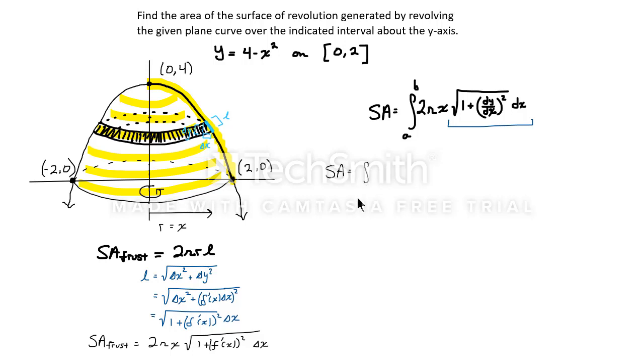It's going to be the integral from 0 to 2 of 2πx times the square root of 1 plus... oh, hold on, let's find out what dy/dx squared will be. Usually useful to do this separately. dy/dx, if y is equal to 4 minus x², dy/dx will be negative 2x. And dy/dx squared, nothing more than 4x², so that's what we're going to put there.